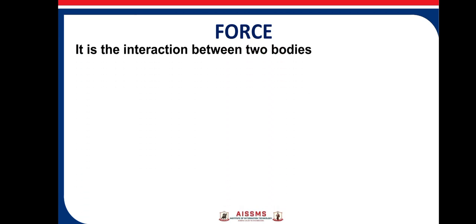As we know, every machine or every structure is made up of lots of members connected together. If you consider a machine, members are connected together. If you consider a structure — let's say a building or a bridge — then also a lot of members are connected together. Look at your room: there is a beam, there is a column, a lot of things are connected together. All these bodies are interacting with each other. So force is nothing but the interaction between two bodies. In simple language, we can define it as the interaction between two bodies.